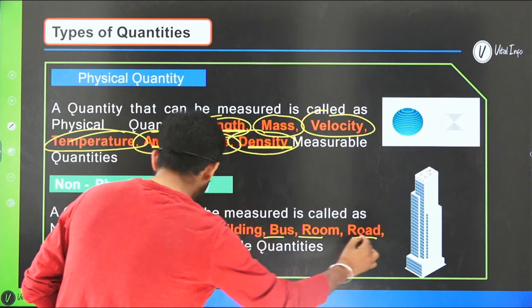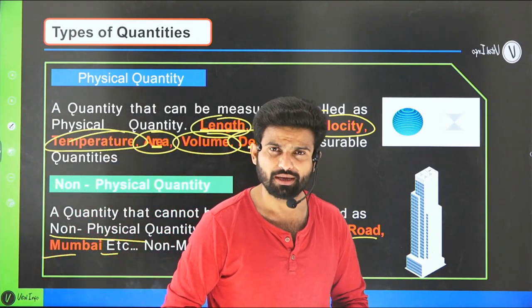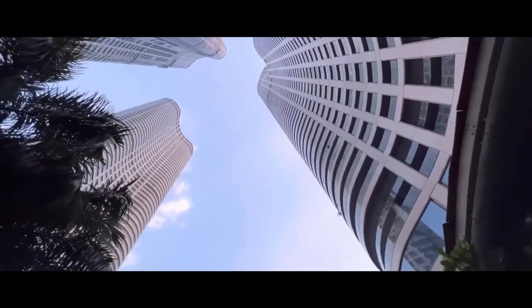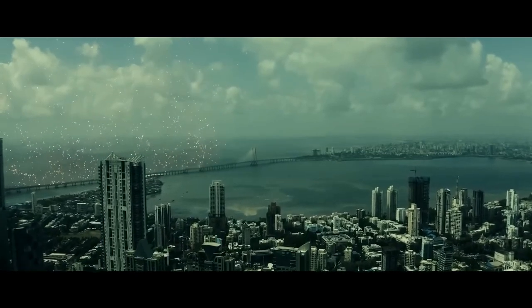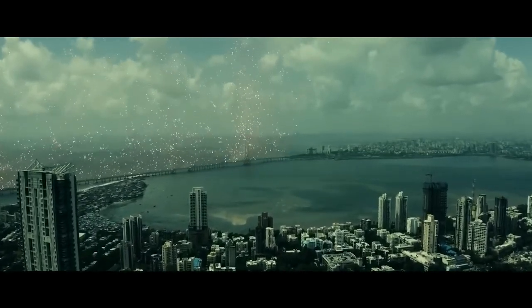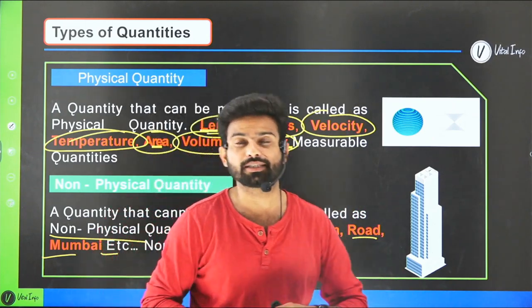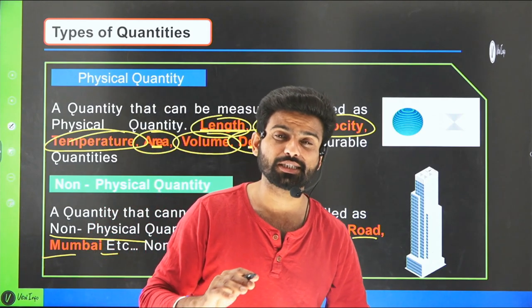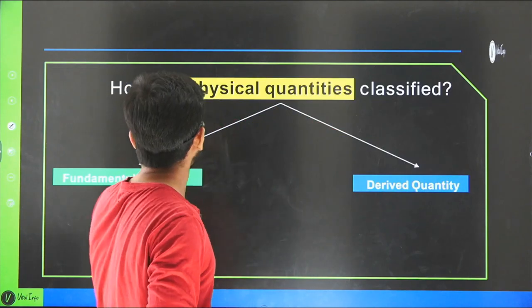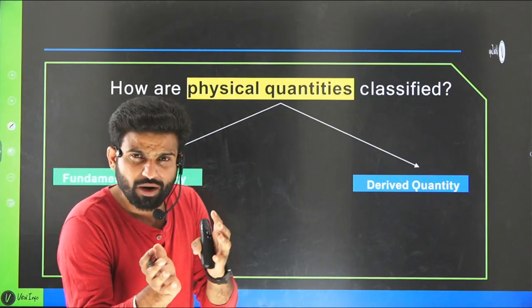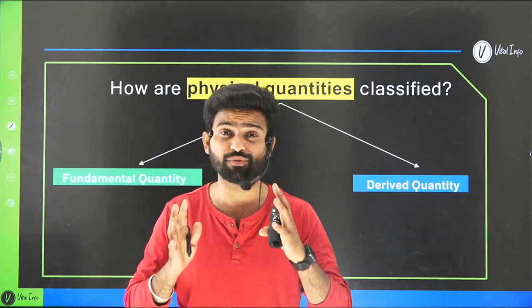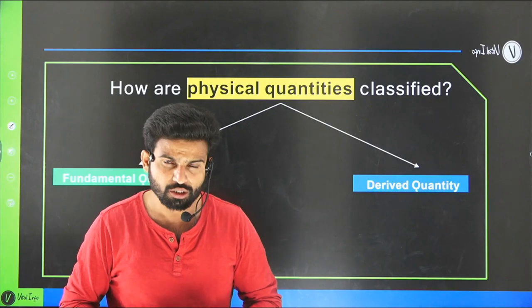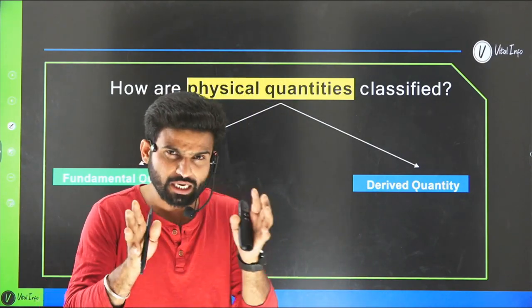Examples of non-physical quantities include buildings, buses, rooms, roads, Mumbai, Bangalore, etc. You cannot measure Bangalore or Mumbai directly. However, Mumbai's population or Mumbai's area can be measured. But Mumbai itself is not a measurable quantity. In physics, we will only discuss physical quantities, not non-physical quantities.